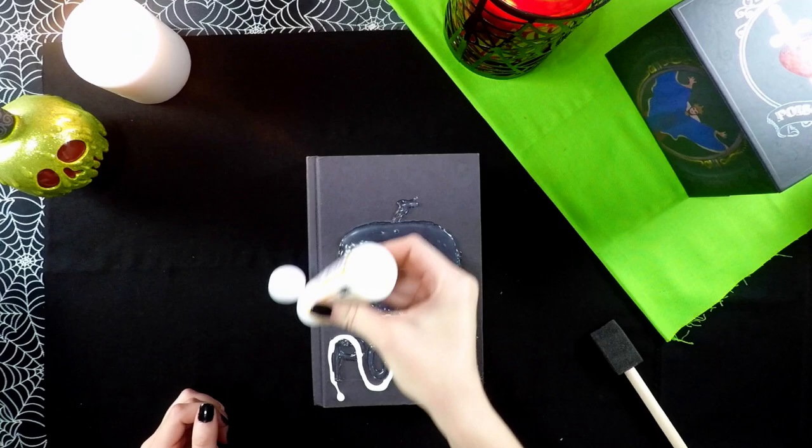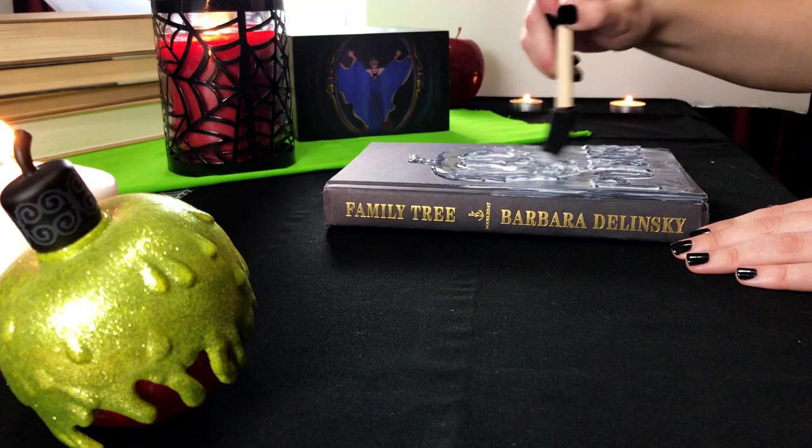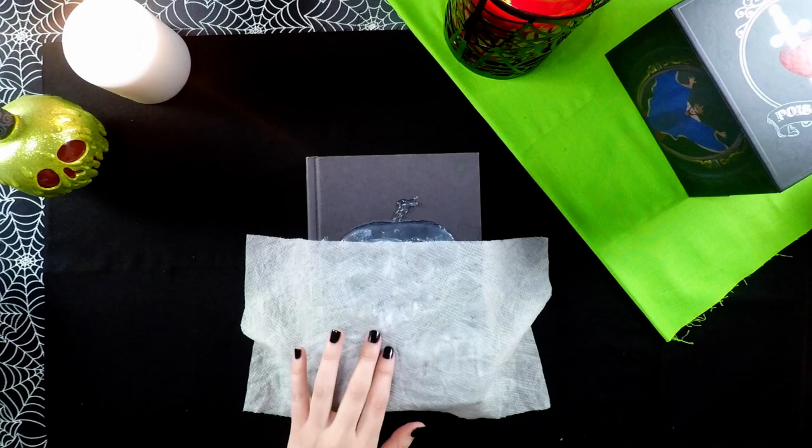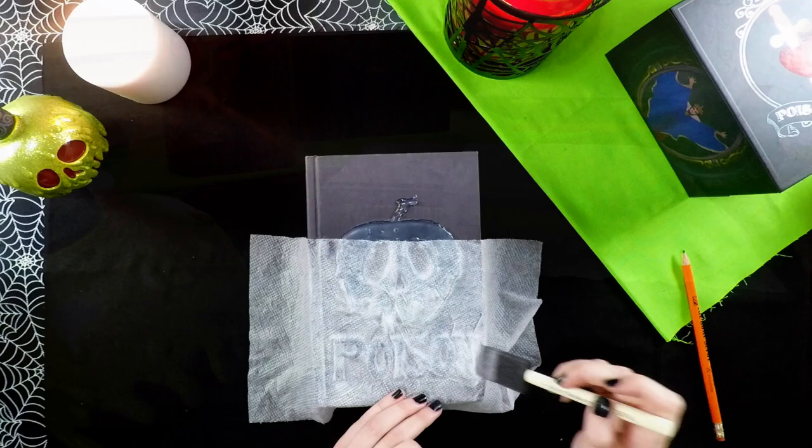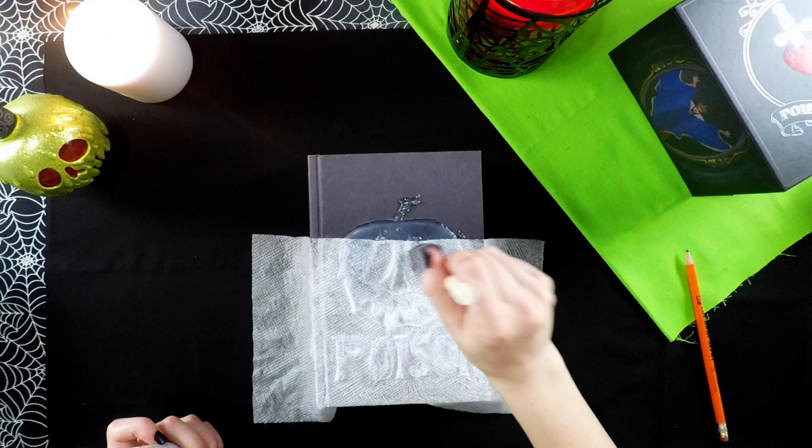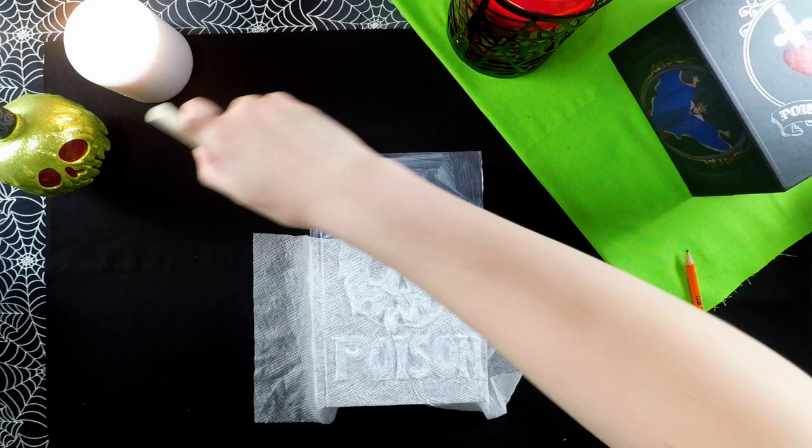Next I'm taking some Mod Podge and a paintbrush and I'm applying this all over the cover of the book. Then I'm taking a damp paper towel and I'm placing that on top of the cover of the book. Once that's in place I'm putting down another layer of Mod Podge on top of the paper towel. As you apply the Mod Podge be sure to define the edges of the design so it's easy to see.